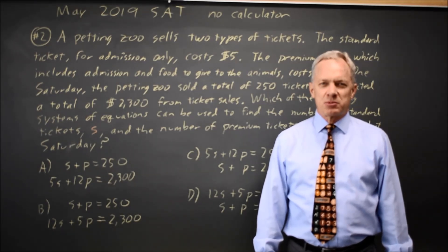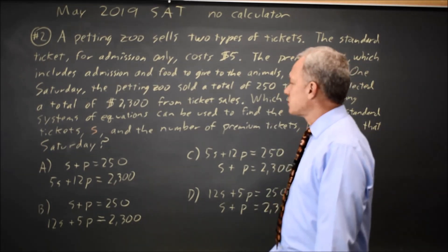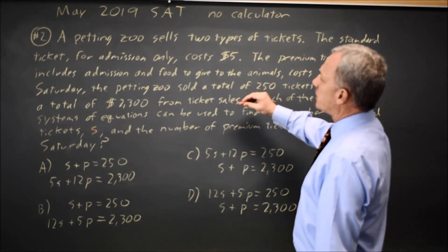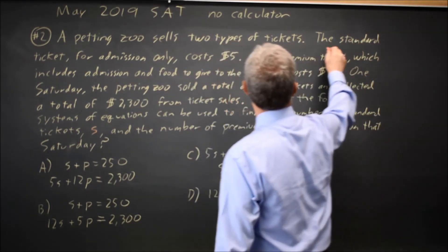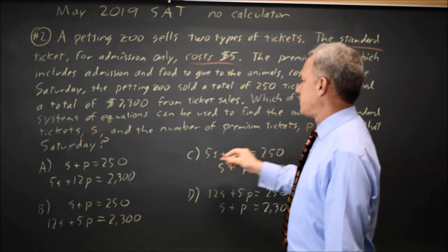This is calculator question number 2 from the May 2019 SAT exam. The College Board is asking us to write a system of equations, and they tell us that standard tickets cost $5, and the number of standard tickets is S.